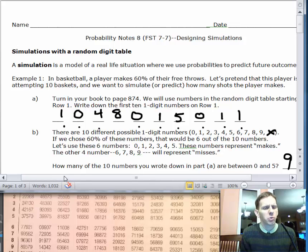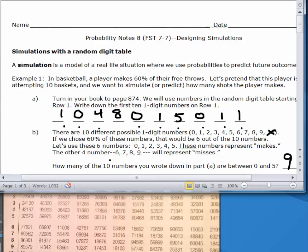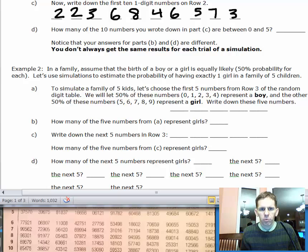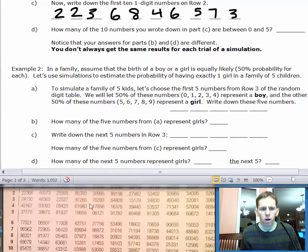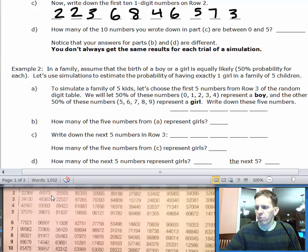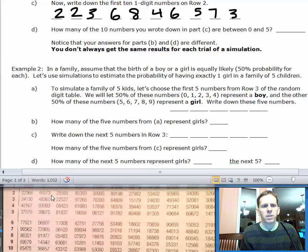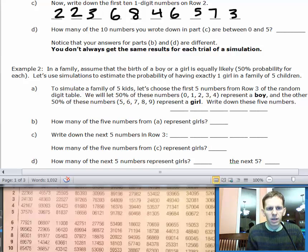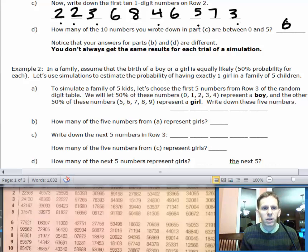Part C: Write down the first 10 one-digit numbers in row 2, and determine how many makes would be represented there. If we go to row 2, the first 10 numbers on row 2 are 2, 2, 3, 6, 8, 4, 6, 5, 7, 3. You can see those numbers right here in the diagram. For part D, when it says how many of these 10 numbers you wrote down are between 0 and 5, we'll count them out. We have 1, 2, 3, no, no, 4, no, 5, no, 6 numbers. This represents 6 made free throws.